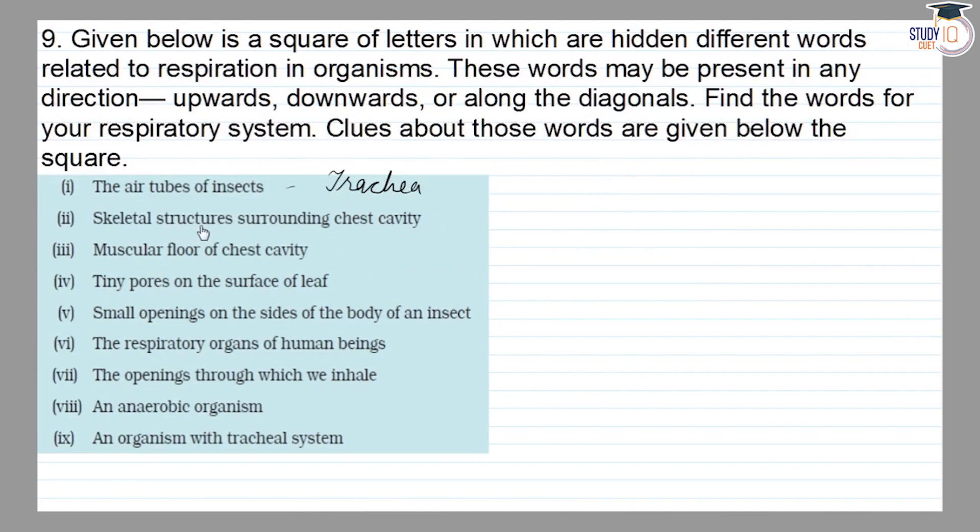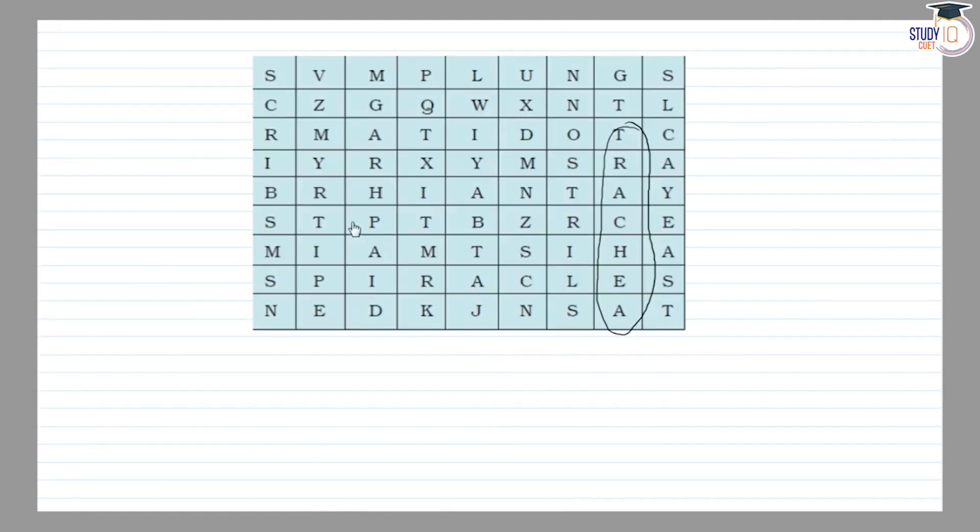The second, skeletal structure surrounding chest cavity, is ribs. Where is ribs? This is here, ribs.